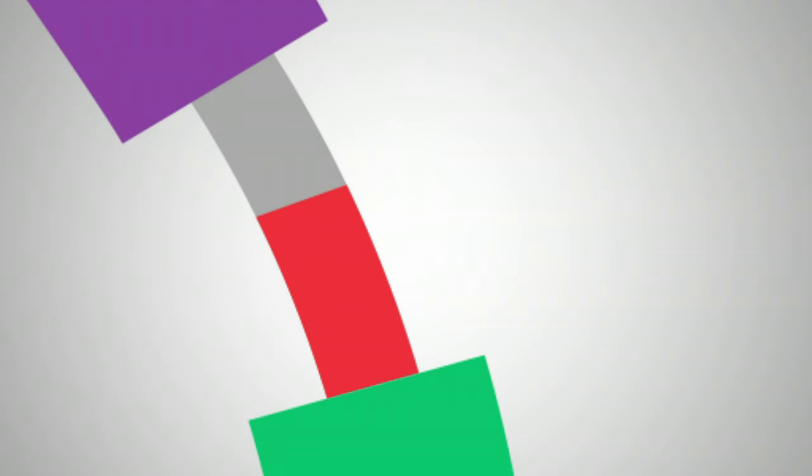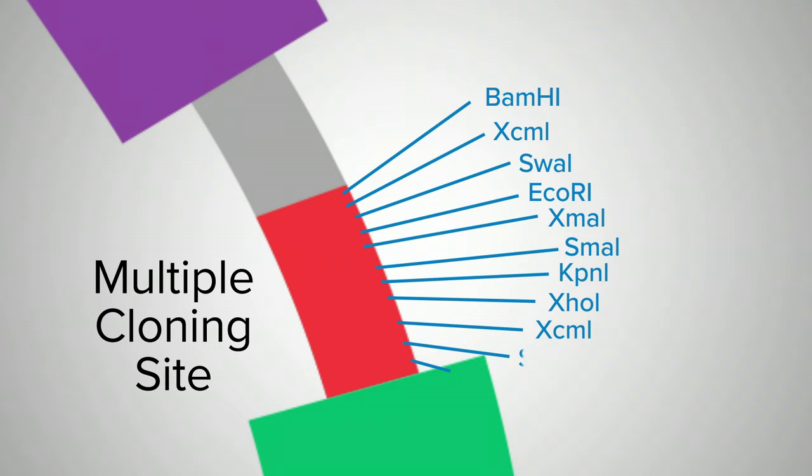Often, these restriction sites are located in what's called a multiple cloning site, a short segment of DNA that contains several restriction sites. This adds flexibility to the cloning process.